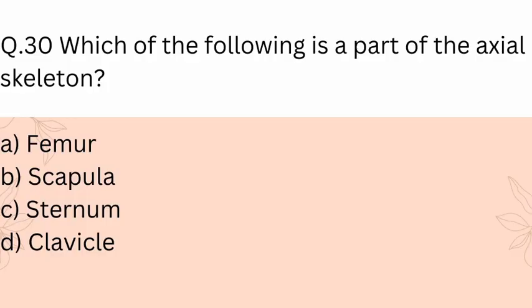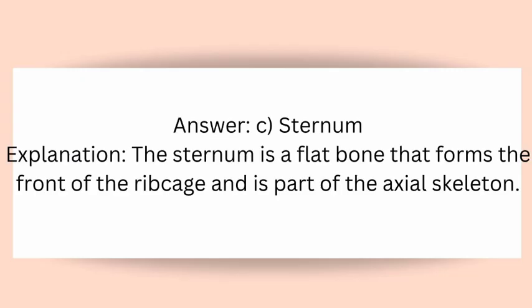Question 30: Which of the following is a part of the axial skeleton? A) Femur, B) Scapula, C) Sternum, D) Clavicle. Answer: C) Sternum. Explanation: The sternum is a flat bone that forms the front of the ribcage and is part of the axial skeleton.